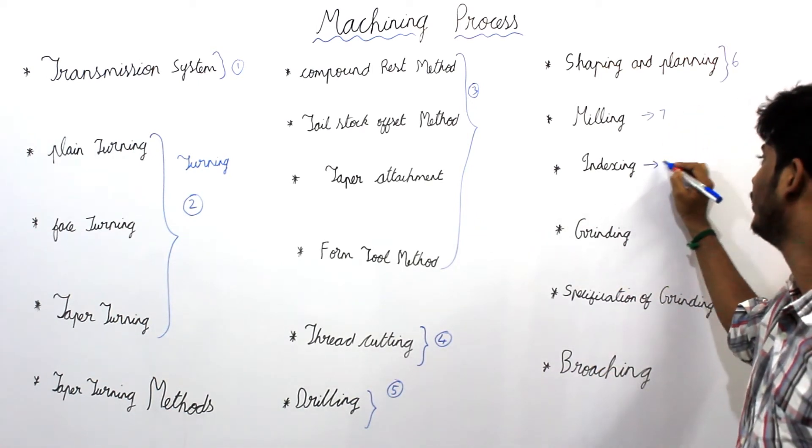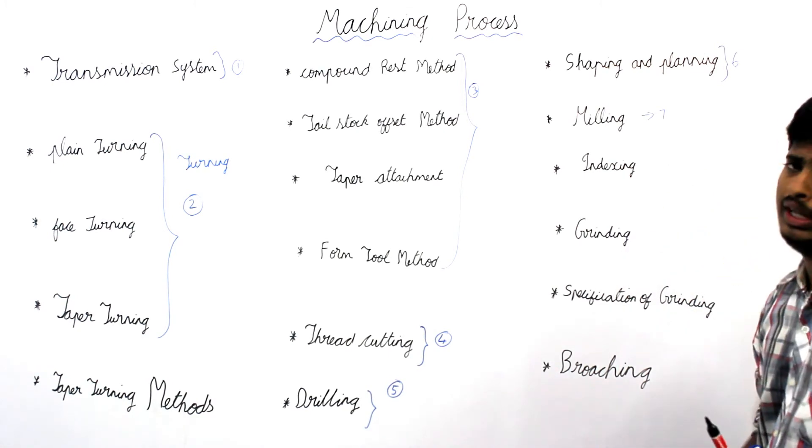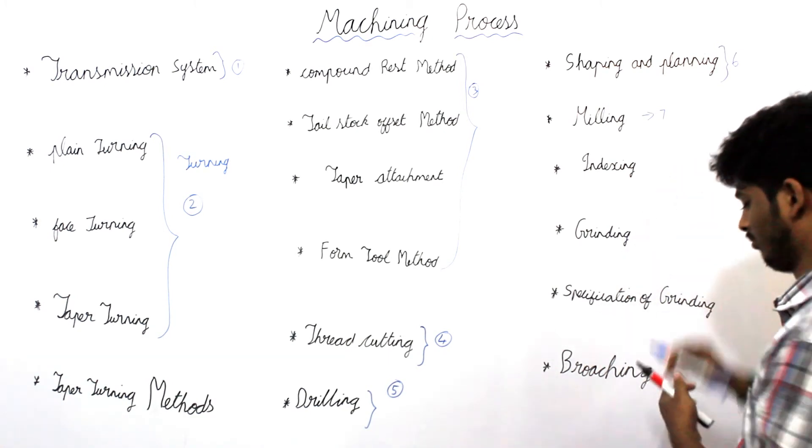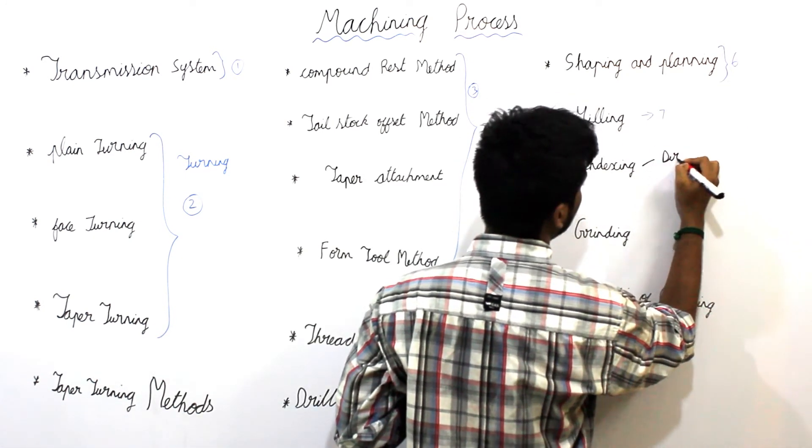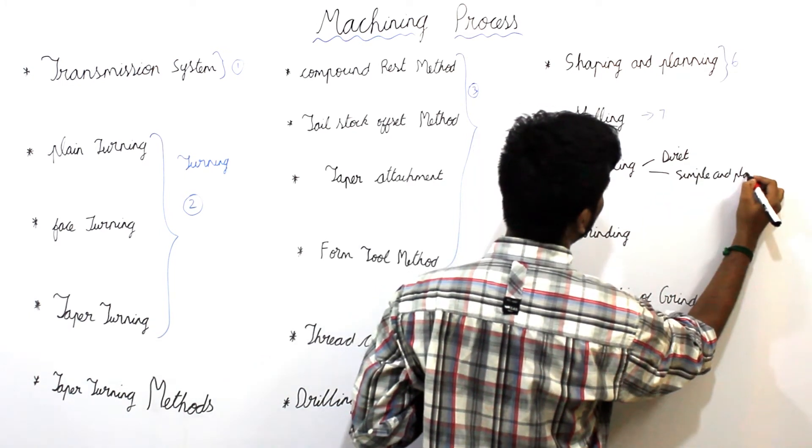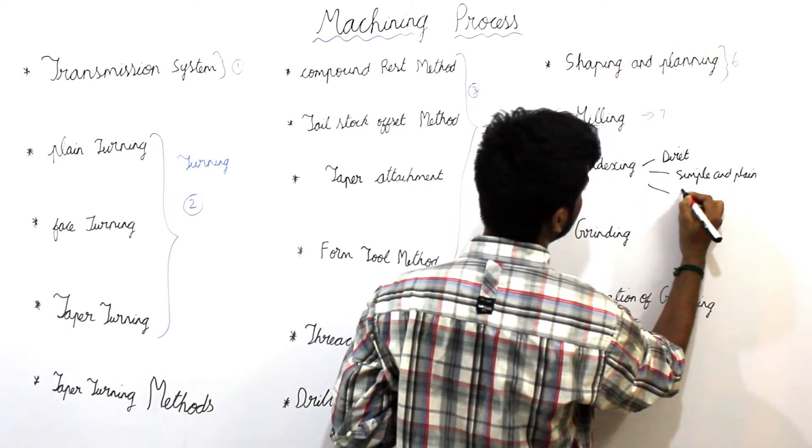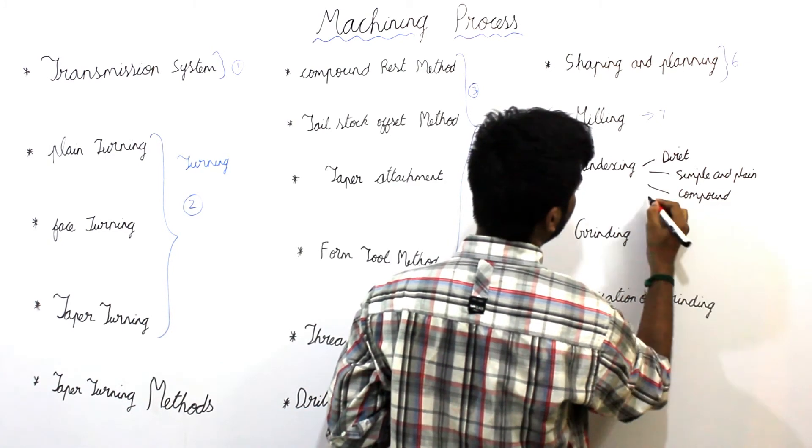Indexing is also simple. Under indexing operation, we have four types of indexing operation. That is direct indexing, simple and plain indexing, third one is compound indexing and finally we have differential.